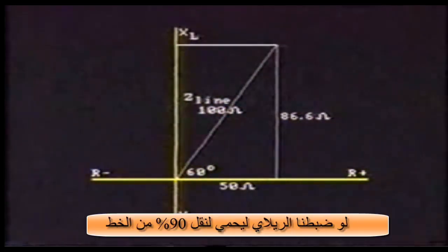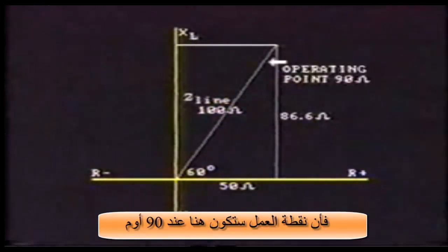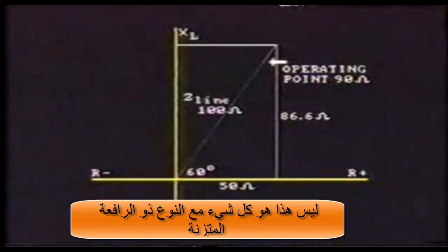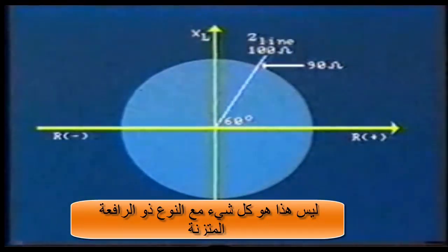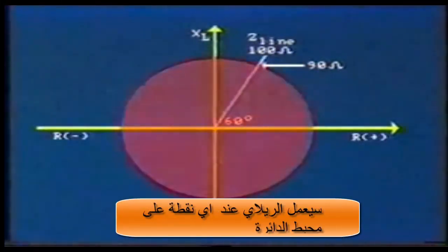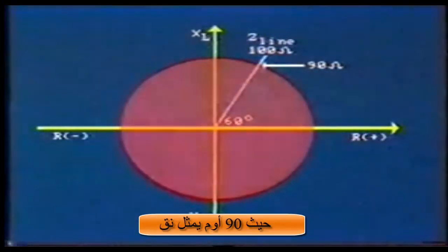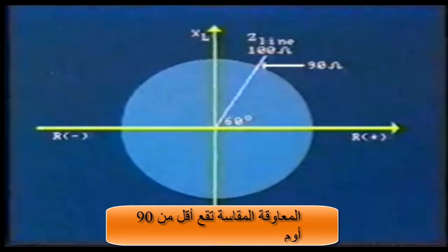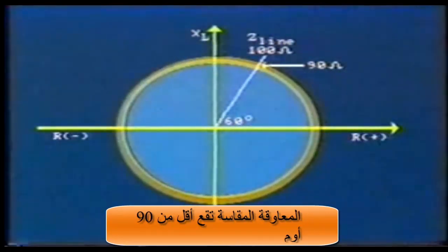If we were to set our relay to protect 90% of this line, then the operating point would be here at 90 ohms. The relay would operate for any impedance along this line between 0 and 90. With the simple balanced beam type relay, it would operate for anywhere within this circle, where 90 ohms is the radius. The balanced beam does not take into account phase angle or direction of current flow — it will trip as long as the measured impedance falls below 90 ohms.